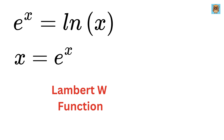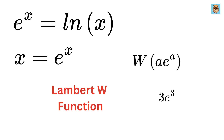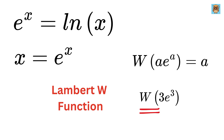Now, suppose we have a function of the form a times e to the power of a, where a can be any expression. For example, we can write 3 times e to the power 3. If we apply the Lambert W function on this expression, we get the result as a itself. So if we apply the W function here, the result will be 3.